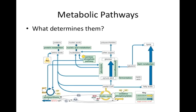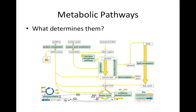Each step in a metabolic pathway requires a different enzyme. This diagram shows the anabolic pathways by which complex molecules are formed from simpler molecules — for example, products of the Krebs cycle combine with ammonia to form amino acids, which make up proteins. This diagram also shows the catabolic pathways by which complex molecules break down into simple molecules — for example, lipids break down into fatty acids and glycerol, and the fatty acids get converted into acetyl-CoA, which then enters the Krebs cycle.